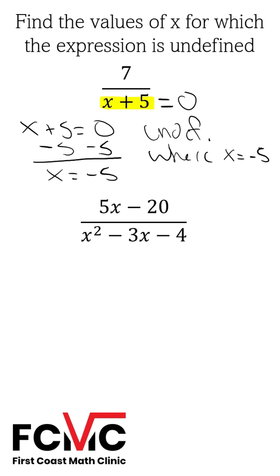Our second expression is 5x minus 20 divided by x squared minus 3x minus 4. Again, we're looking at the denominator. We want to set that denominator equal to 0. We have a trinomial. We know this is going to factor into a pair of binomials.